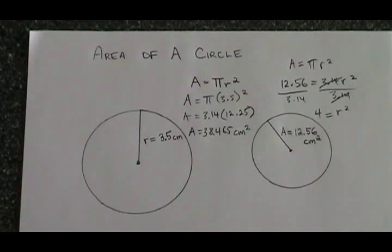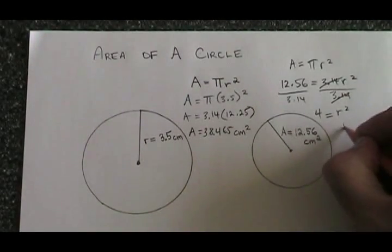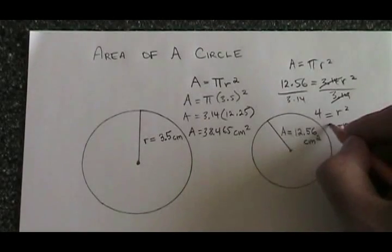If r squared equals 4, square root both sides. R equals the square root of 4, which is 2.